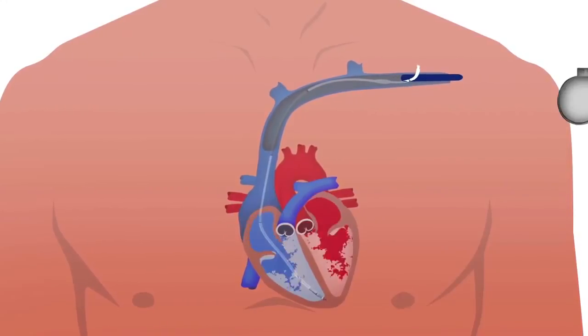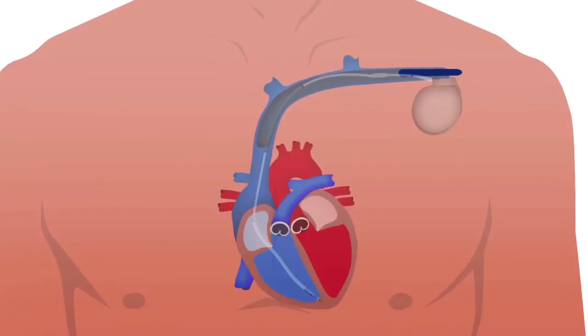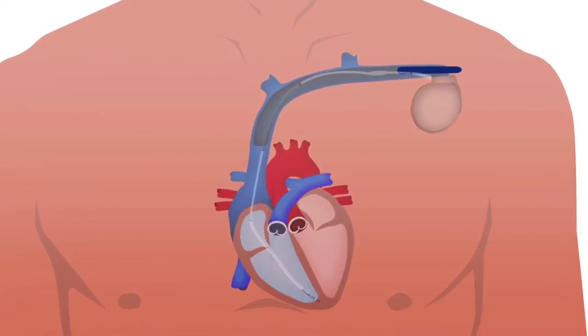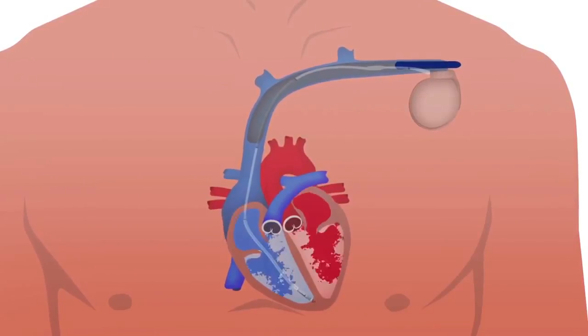On the upper left side of the chest near the collarbone, a pocket is formed under the skin where the ICD is fitted. The lead or leads are then attached to the ICD. Once implanted, most doctors test the device and adjust the settings to work best for the patient's heart.